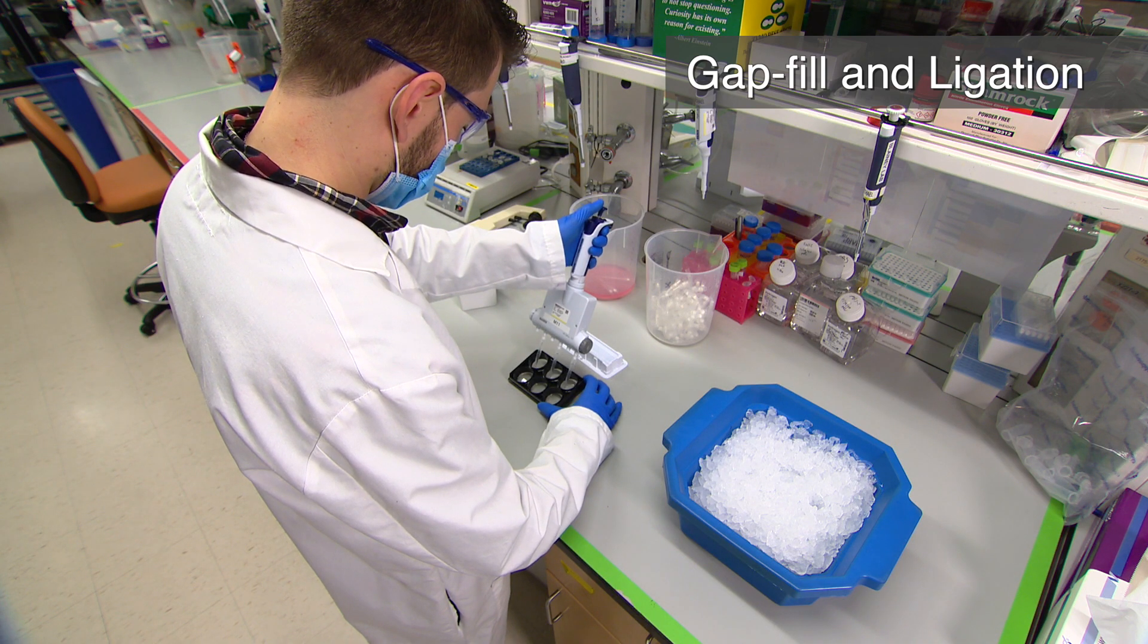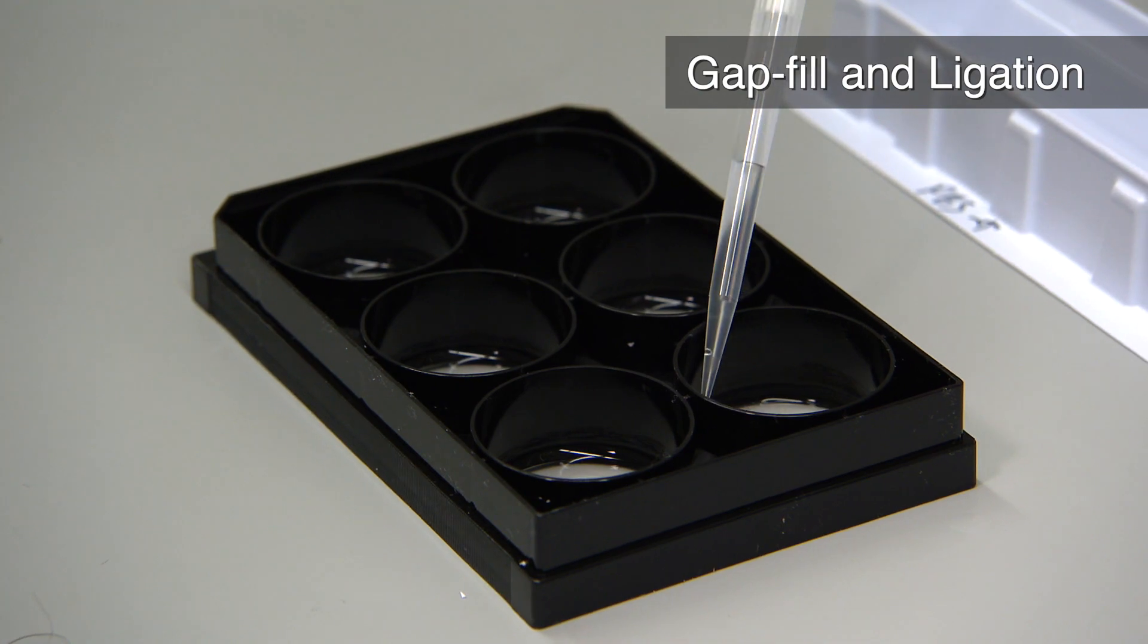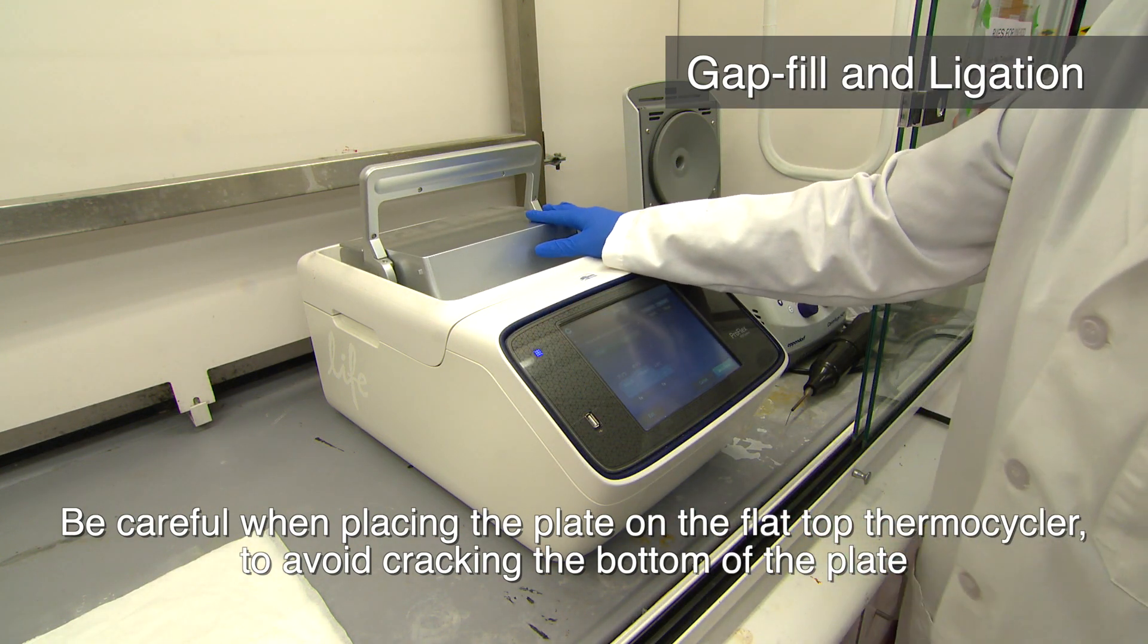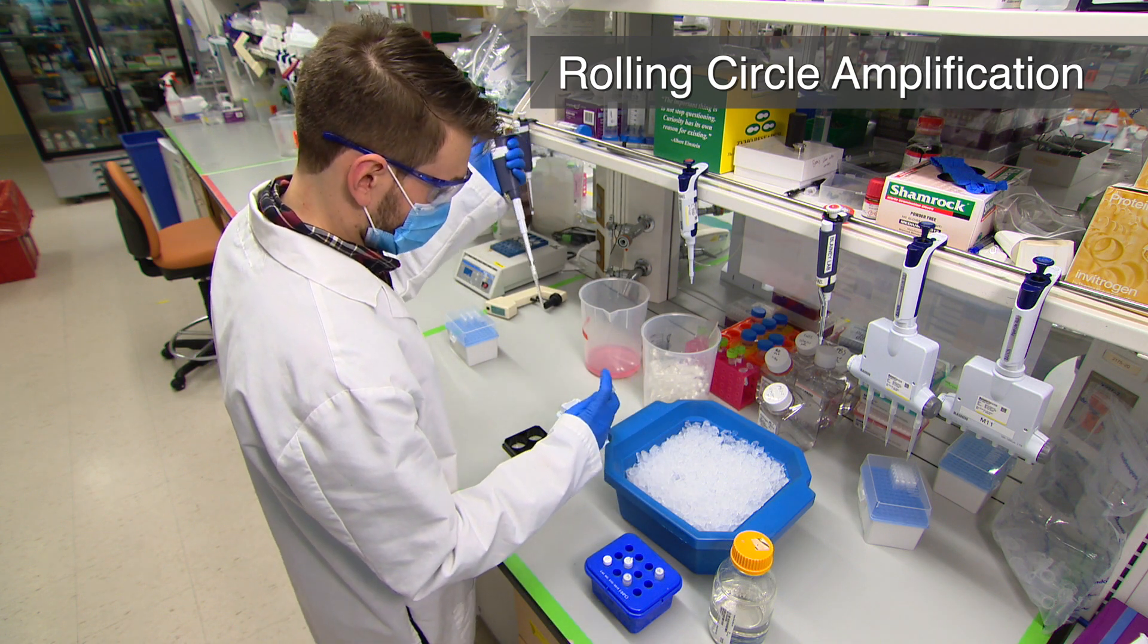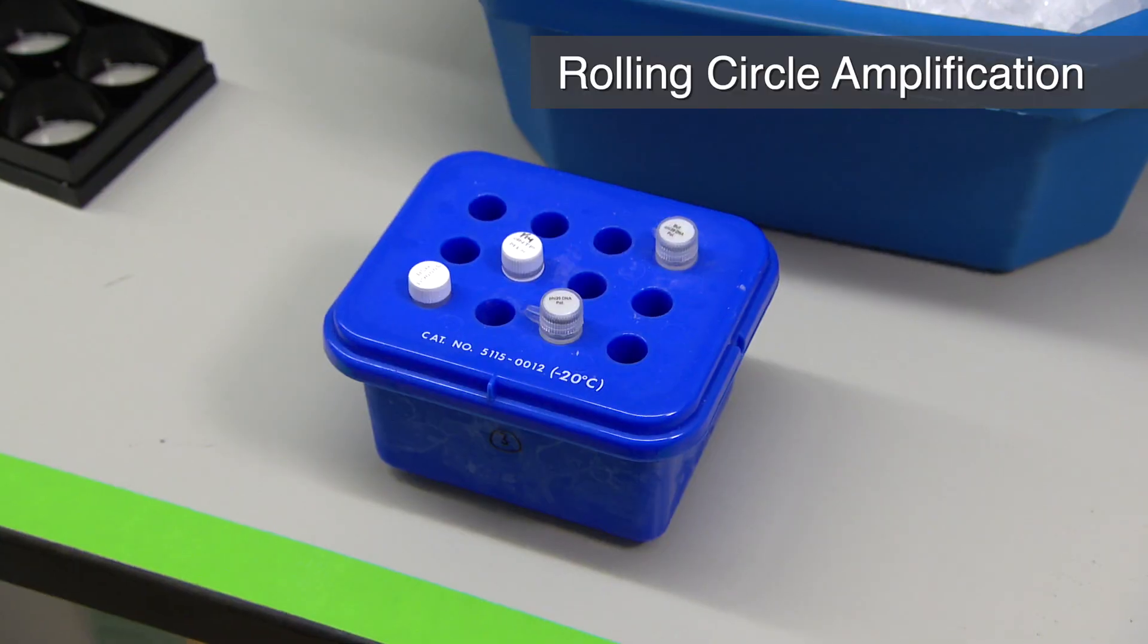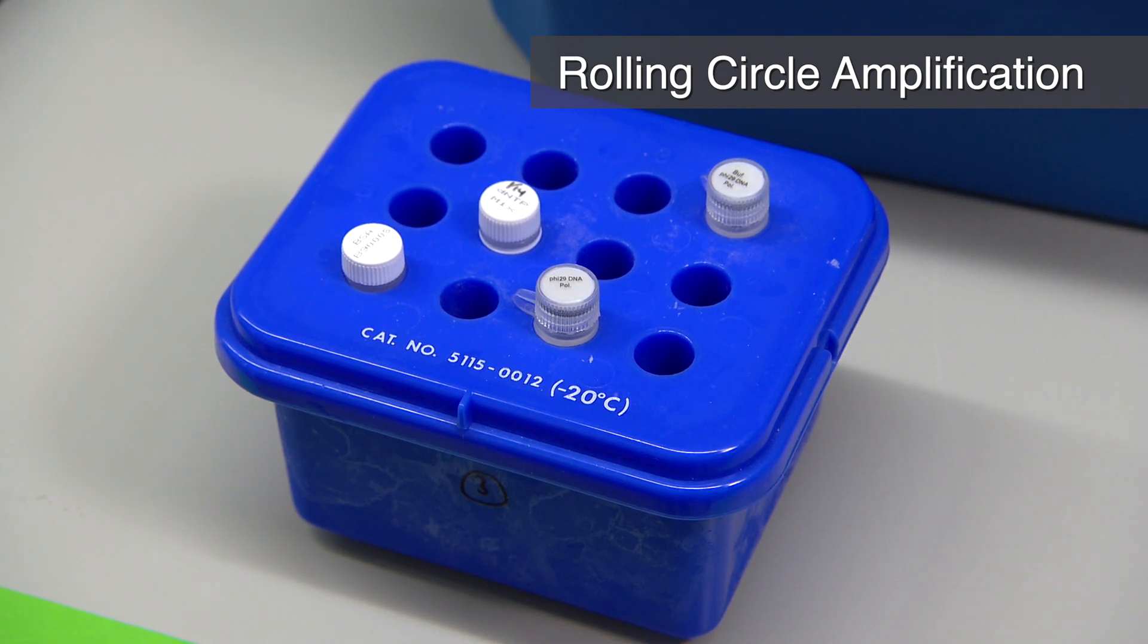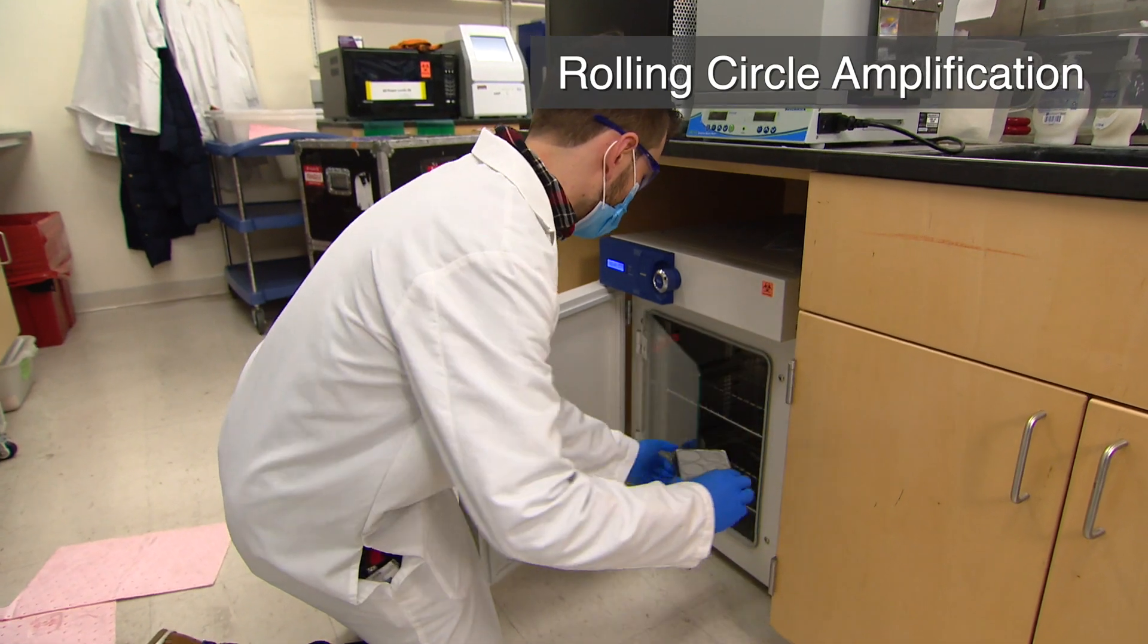Wash 3 times with PBS-T and add 500 microliters of gap-fill reaction mix to each well. Place the plate on a flat-topped thermocycler and heat for 5 minutes at 37C, then 90 minutes at 45C. Wash 3 times with PBS-T and add 500 microliters of RCA reaction mix to each well. Avoid thawing Phi-29 unnecessarily as it is a sensitive enzyme. We generally keep it in a pre-chilled bench-topped cooler and minimize time outside of the freezer. Incubate at 30C overnight.